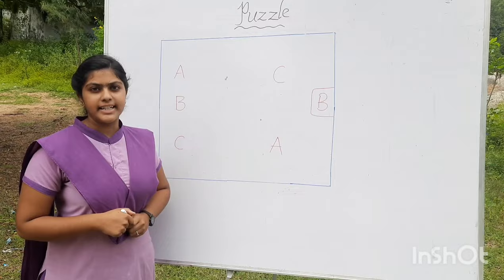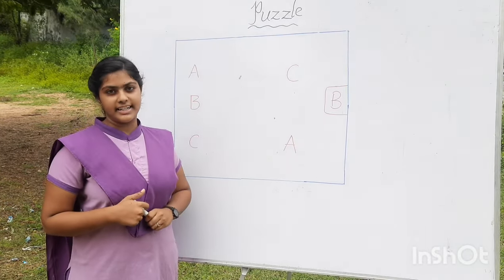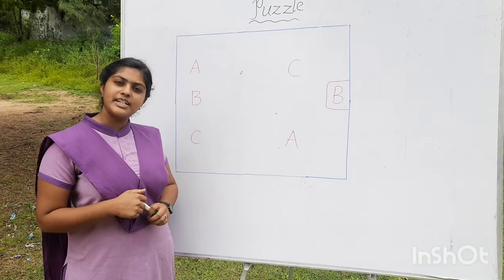Now we have to join the same letters A to A, B to B and C to C but without intersecting the lines. Can you solve this puzzle?